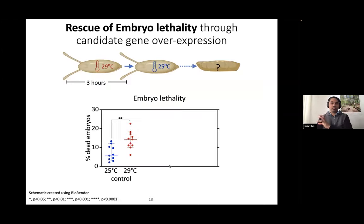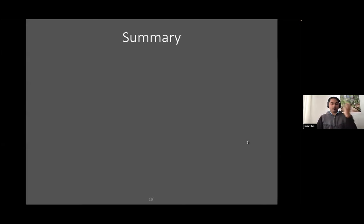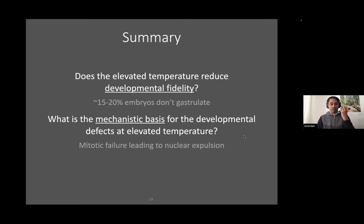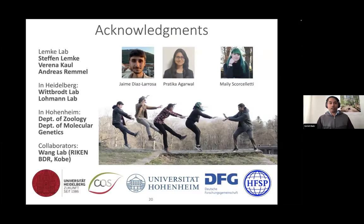Same experimental setup: 29-degree exposure, letting embryos go, asking if they become larvae or not. Control embryos show the 29-degree problem. But when we overexpress alpha-catenin and Shaggy, we see that this rescues the defect — embryo lethality is rescued. Mitotic failures are also rescued. That really brings everything together: developmental fidelity is affected, we can understand the mechanistic basis for what's going wrong, and we can rescue these defects. With that, I'd like to close the presentation and acknowledge the people who have been involved. Thank you for your attention.